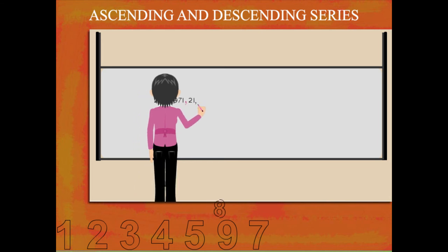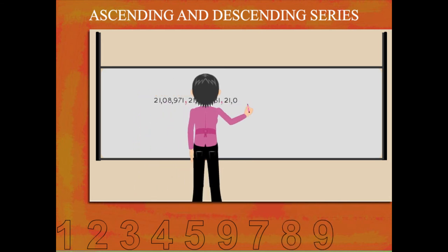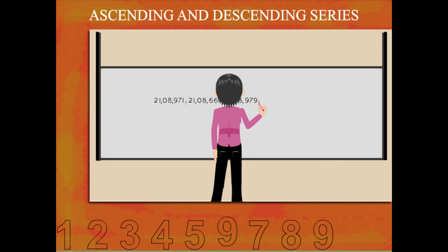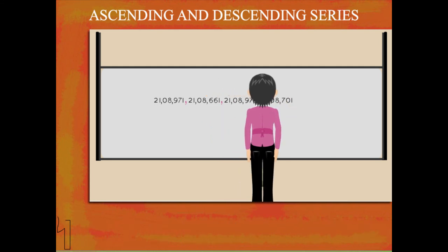Teacher Nancy writes the set of numbers again on the board. She now arranges them in descending order, starting from the largest to the smallest.